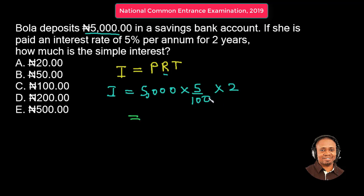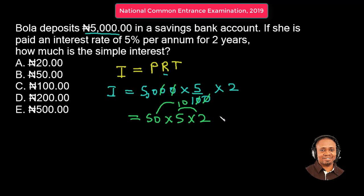The zeros cancel out, so we are left with 50 times 5 times 2. So quickly, 5 times 2 is 10, and 10 times 50 is 500. So the simple interest is 500 Naira for the two years. Answer option E is the right answer.